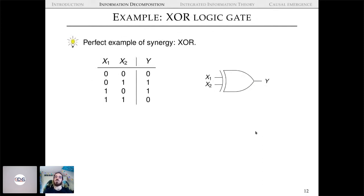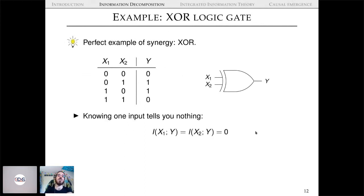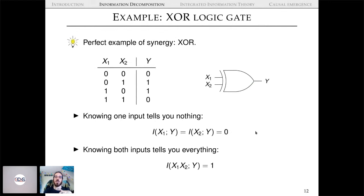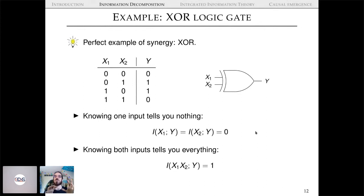The perfect example of synergy is the XOR gate: two binary inputs, one output which is whether the inputs are the same or not. Knowing one input tells you nothing — mutual information of either input with the output is zero. But knowing both inputs tells you everything. The XOR gate is purely synergistic.